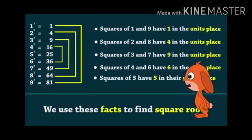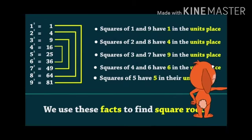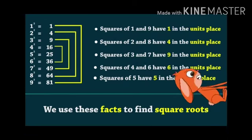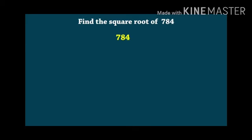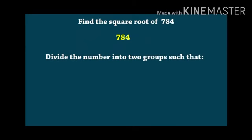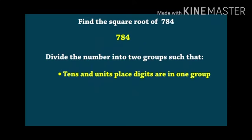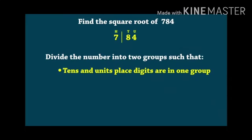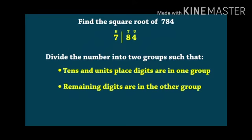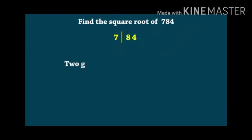So, let's start. For example, we have to find the square root of 784. Divide the number into 2 groups such that tens and units place digits are in one group, remaining digits are in the other group. The 2 groups of 784 will be 7 and 84.